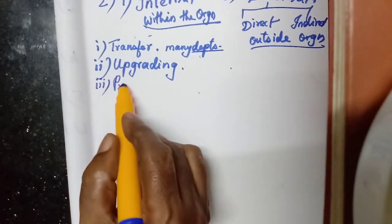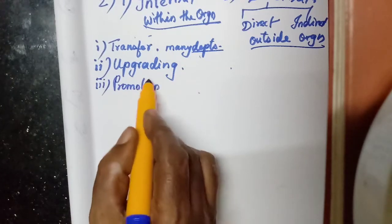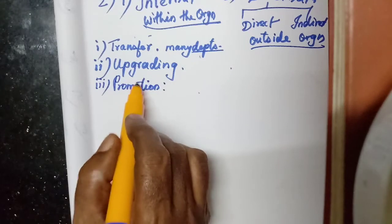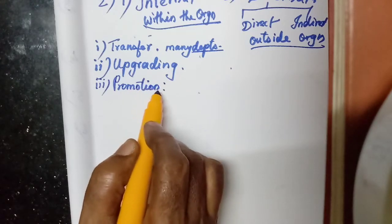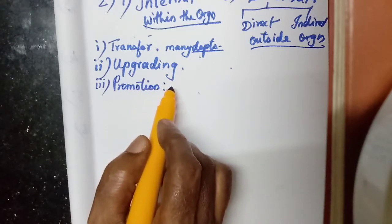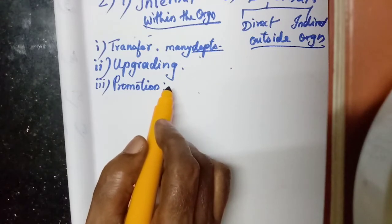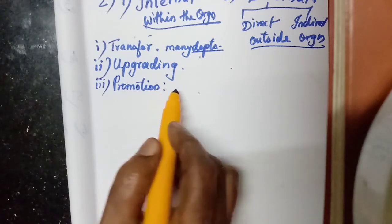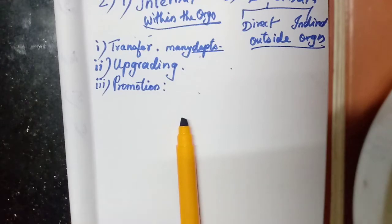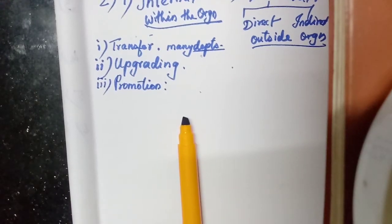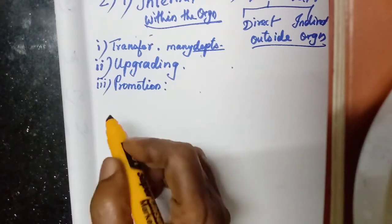Third is promotion. Promotion may be given as per their performance, their seniority, or on the basis of the merits of the employees. The employees can be promoted from the lower level to the higher level — maybe from a lower level employee to the supervisory level, or employee to a manager level. That is called promotion.